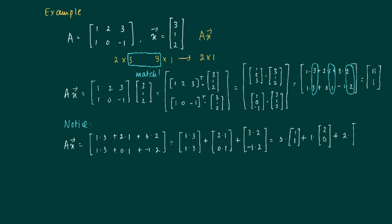So we see that we get a certain combination of the vectors 1, 1, 2, 0 and 3, minus 1.